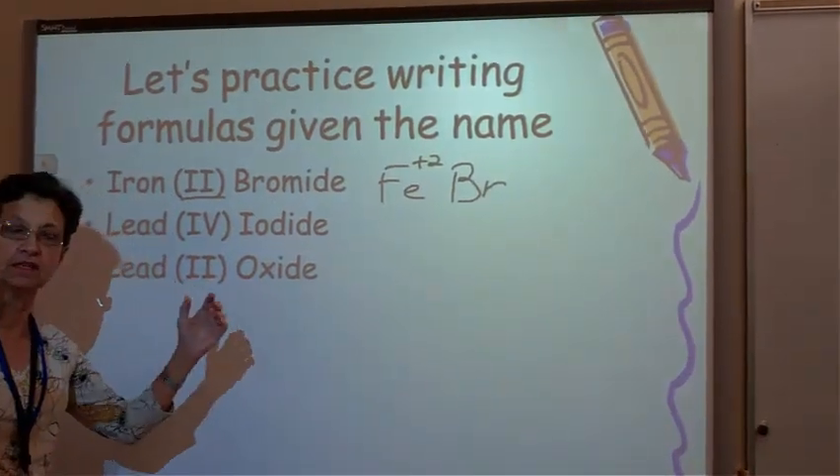Then I have bromide. And if you go back to your periodic table for a moment, take a look at where bromide is. It's in the group that has minus 1. So minus 1. Now it's time for us to crisscross.